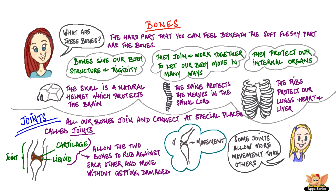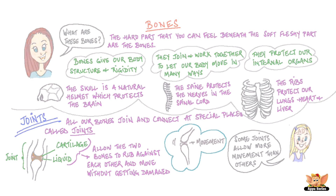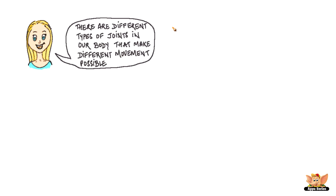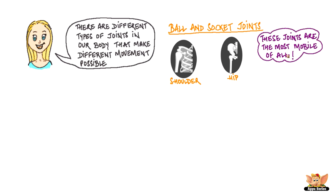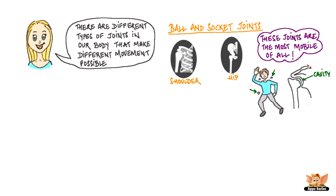That is the reason why it is only at these joints that movement is possible. Some joints allow more movement than others. There are different types of joints in our body that make different movement possible. Ball and socket joints are found in the hip and the shoulder. These joints are the most mobile of all. That's why the arm and the leg can move in so many directions at the shoulder and hip. At the shoulder, the shoulder bone has a cavity while the long arm bone is shaped as a ball at its end, so the ball fits in the cavity and can rotate, making movement possible in many ways.